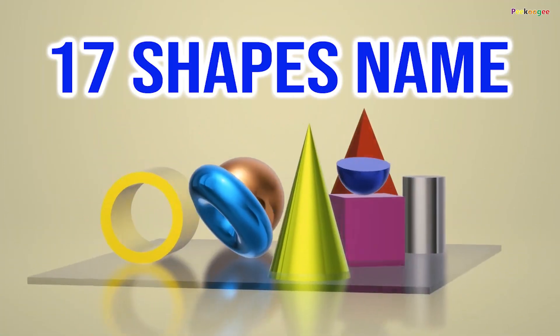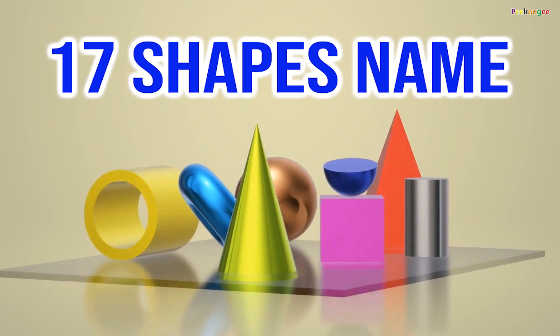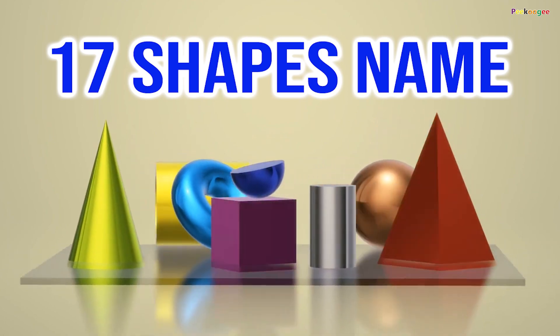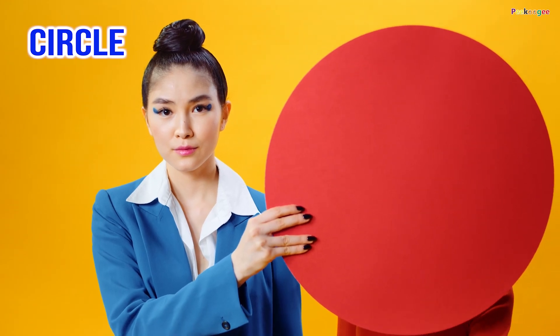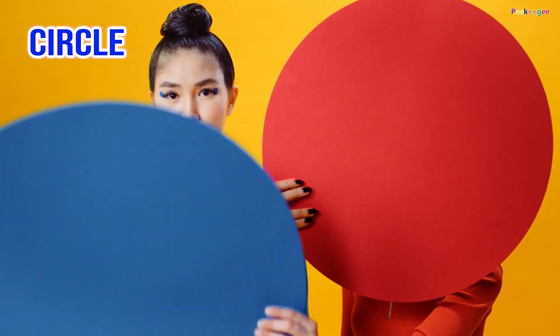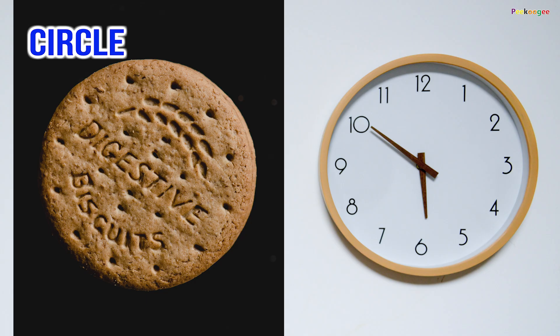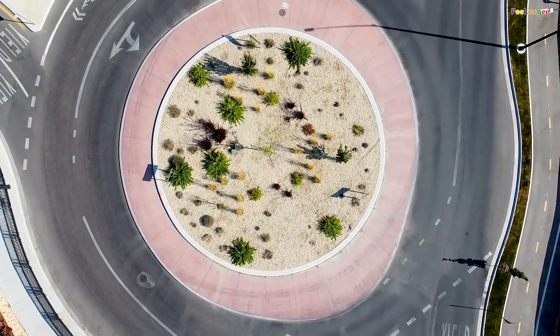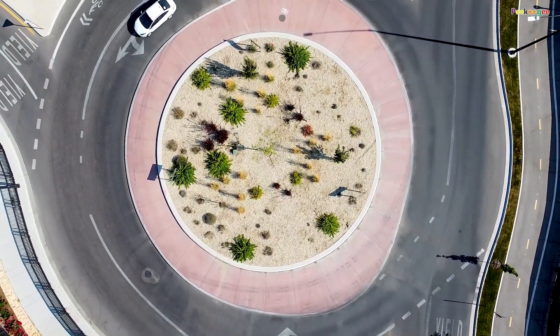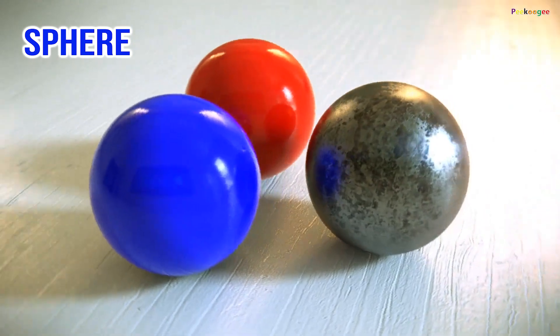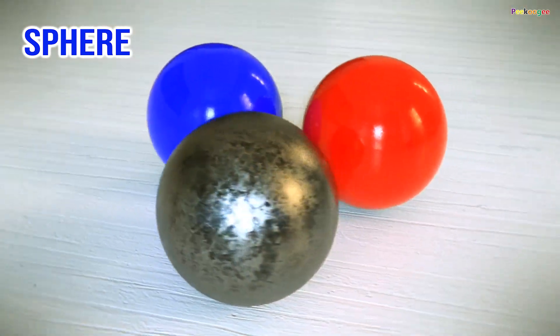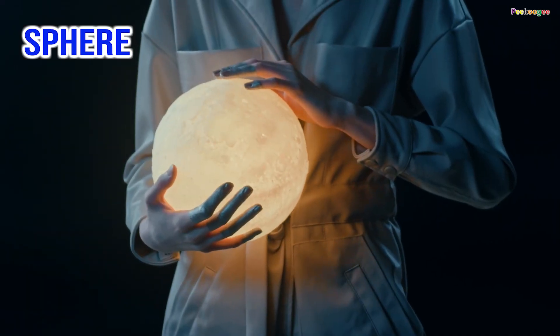Hello friends, today we will know the names of the shapes. Circle — this shape is a circle. Sphere — this shape is a sphere.